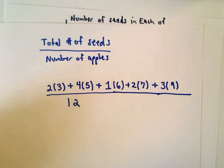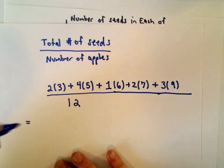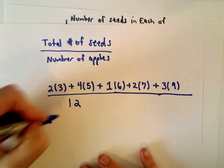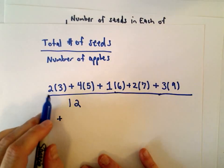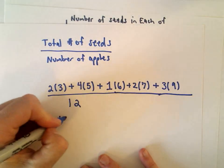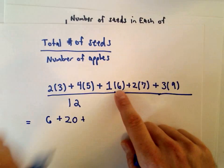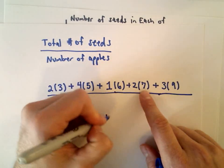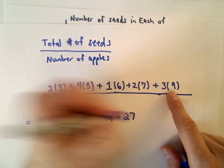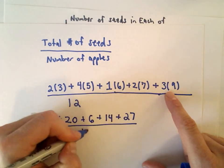So that's going to be the fraction we have to compute here. Again, you can use a calculator. I'm at least going to compute part of this by hand. So two times three is six. Four times five is twenty. One times six is six. Two times seven is fourteen. Three times nine is twenty-seven. Divided by twelve.